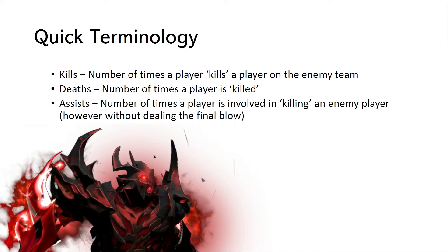Before we get into the visualizations, I have some quick terminology to cover. This all sounds quite violent, but just remember the chess analogy — this is in no way symbolically different from taking a piece on the chessboard. When I say kills, I'm talking about the number of times any player kills an opposing player on the enemy team. Deaths is the inverse of this. And assists is any kill that a player was a part of, but was not directly awarded to him or her.